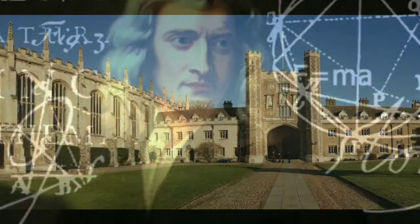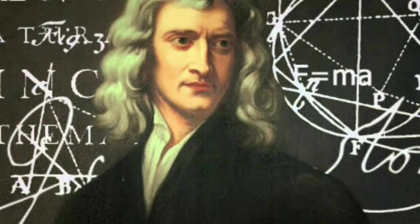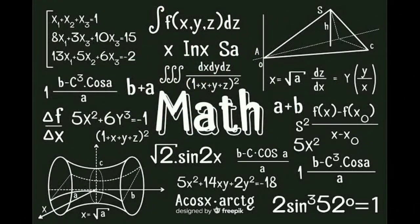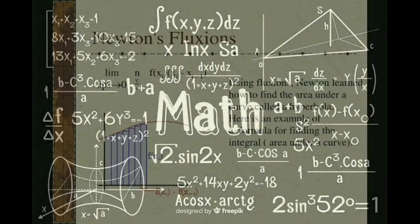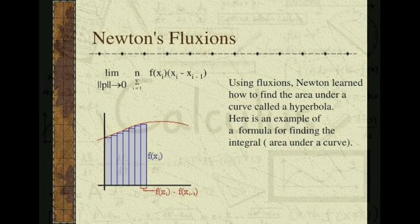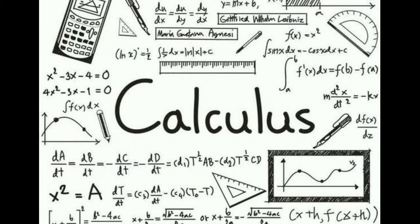Isaac Newton was one of the greatest mathematicians. When he was twenty-four years old he invented a whole new branch of mathematics which he called the fluxion. Today we call this the calculus. Calculus has so many uses in all other branches of science like physics, chemistry, mathematics, and engineering.